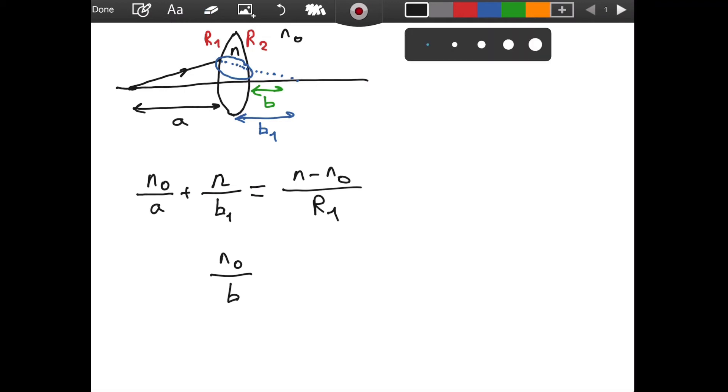However, the other part is a little more interesting. So, plus, we will have, obviously, n. I mean, the light is coming. Let me draw it again. So, the light is obviously coming from n. So, we will have n. We had n₀. We will have n. But, what should be the divisor? What should we divide n by? Well, we will divide it by b₁. And, not just b₁. By negative b₁.